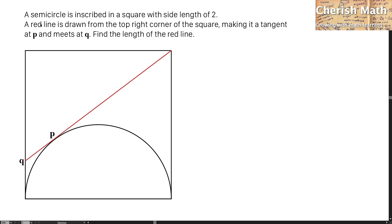Hi from Cherish Math. This is the question. A semicircle is inscribed in a square with side length of 2. A red line is drawn from the top right corner of the square, making it a tangent at P and meets at Q. Find the length of the red line.